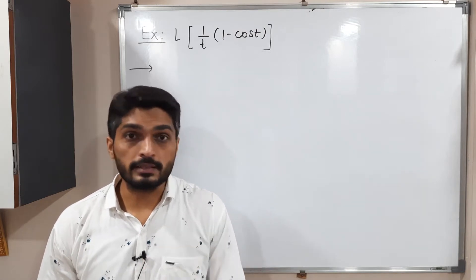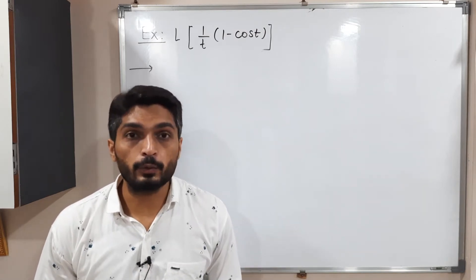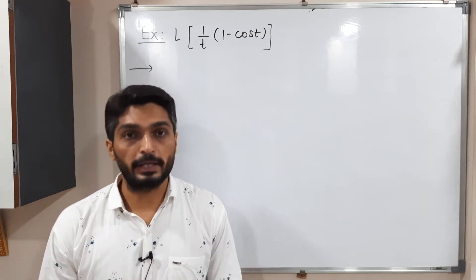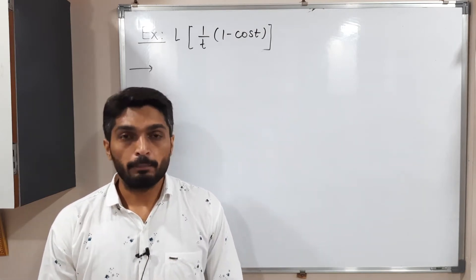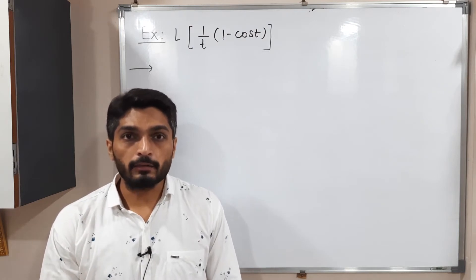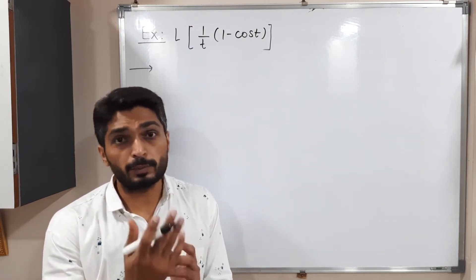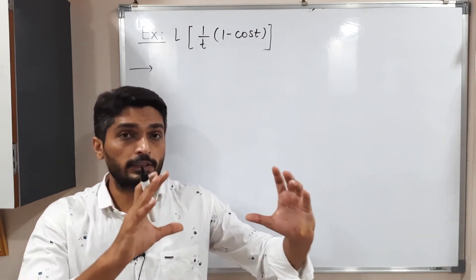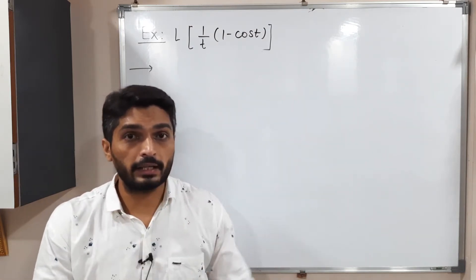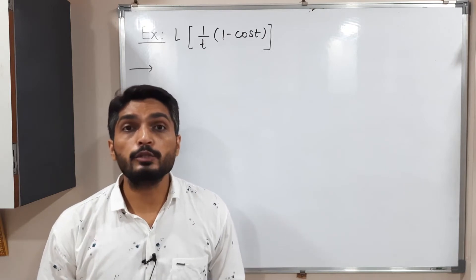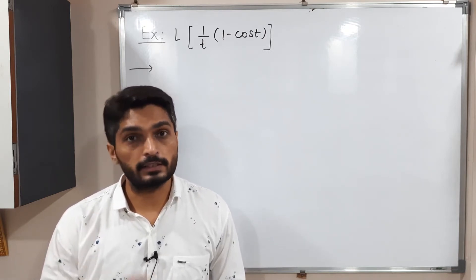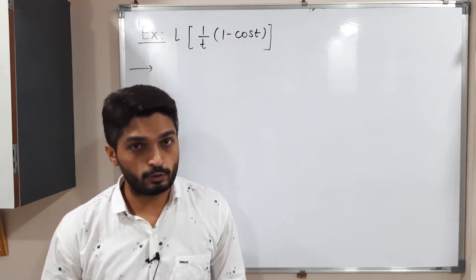Since one by T is there, we are going to use the effect of division by T. Before that, we always start from the right hand side. We will first consider the bracket one minus cos T, and after that I will consider the one by T also.